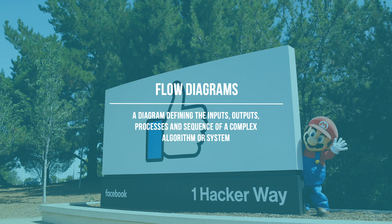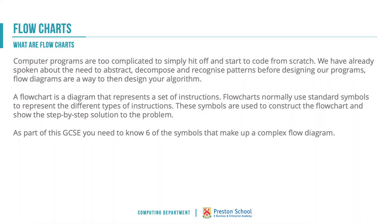A flow diagram is a diagram defining the inputs, outputs, processes, and sequence of a complex algorithm or system. Computer programs are normally far too complicated to create from scratch — we normally need to think around some kind of design once we've undertaken our cornerstones of computational thinking: decomposition and abstraction. A flow diagram is often then the first step in our design process.